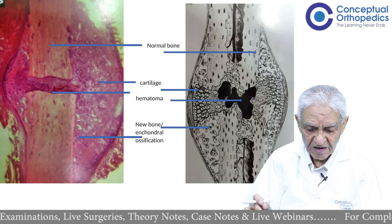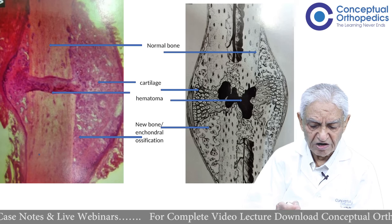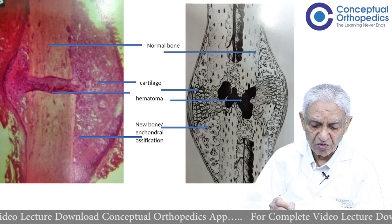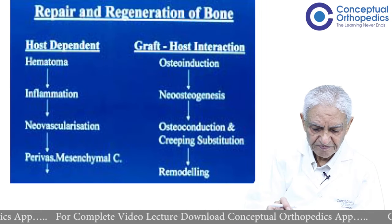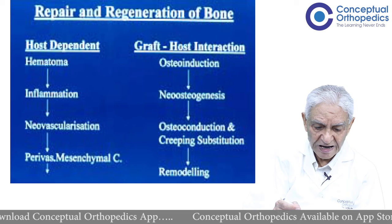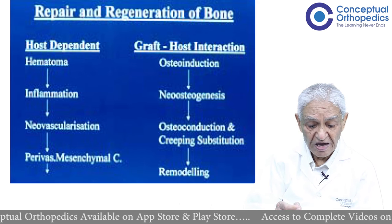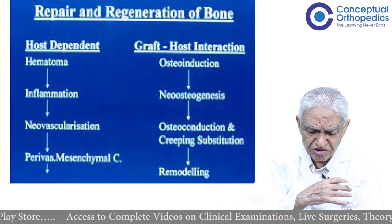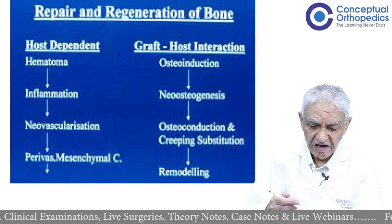Here is another example showing the same thing: bone broken, collection of blood. The blood in due course of time gets converted into cartilage, and this cartilage after some time may get converted into bone — this is called endochondral ossification. The repair takes place based upon two things: the host must provide a good healthy area. Hematoma, inflammation, and neovascularization are all host jobs. Around these neovascularized areas, there are plenty of rich mesenchymal cells, and it is these mesenchymal cells which ultimately change the callus and start making bone.